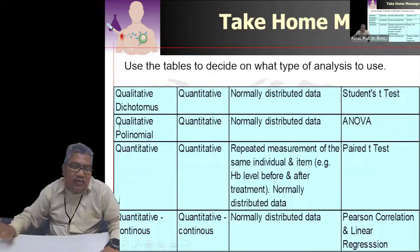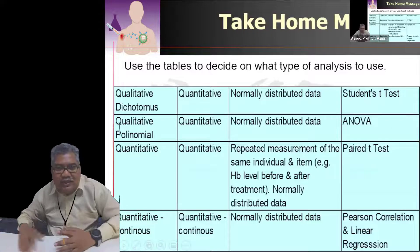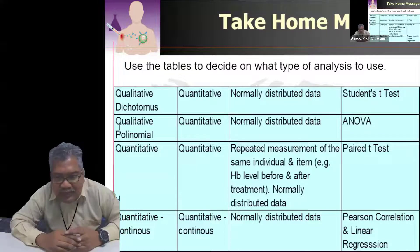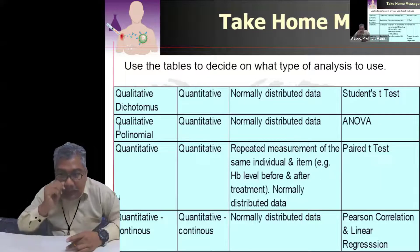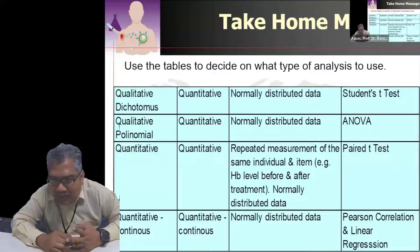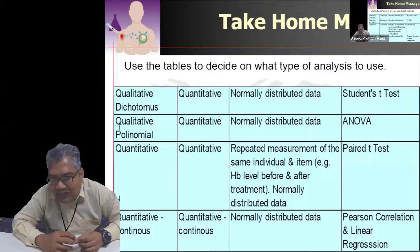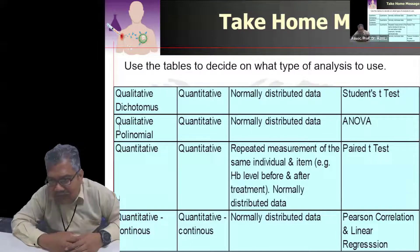I think we are on the last slide already. Take home message: we give a table so hopefully you can use it to decide on the appropriate statistical test. Qualitative dichotomous means two outcomes — male or female, dead or alive. Polynomial means more than two outcomes, like Malay, Chinese, Indian, and others. If the numbers are large enough you can do chi-square; if numbers are small you have to use Yates correction or Fisher's exact test.